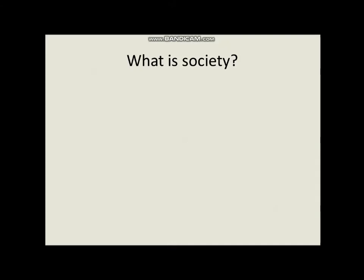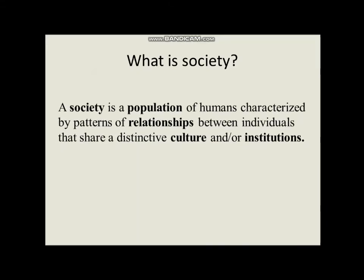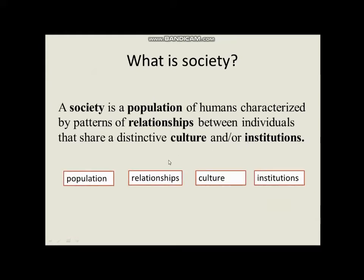The first thing we are going to do is come up with a definition of society. A society is a population of humans characterized by patterns of relationships between individuals that share a distinctive culture and/or institutions. If you take a closer look at this definition, you will notice that there are some key terms: population, relationships, culture, and institutions.